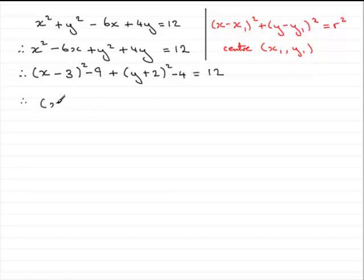and what you end up with is x minus 3 all squared plus y plus 2 all squared equals 12, add the 13, which is 25.